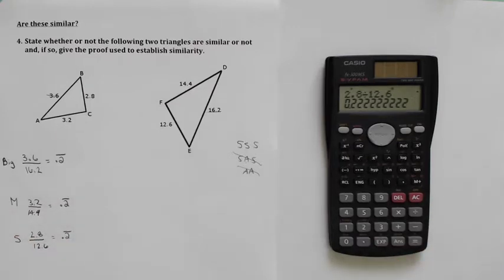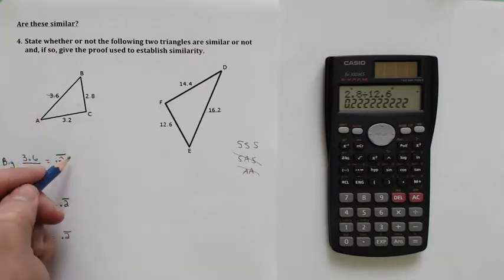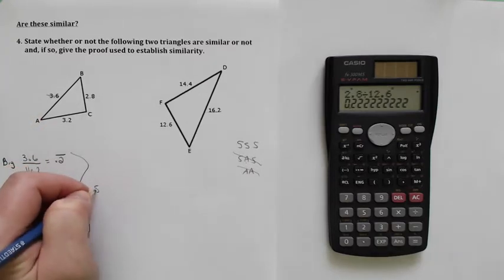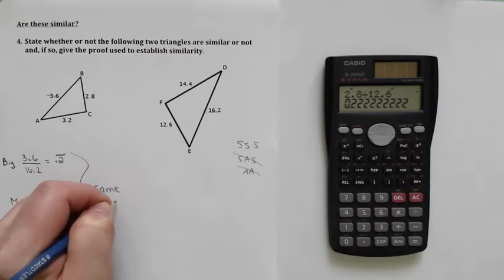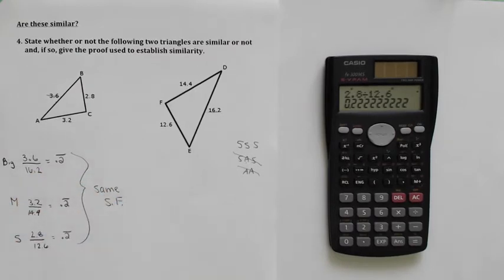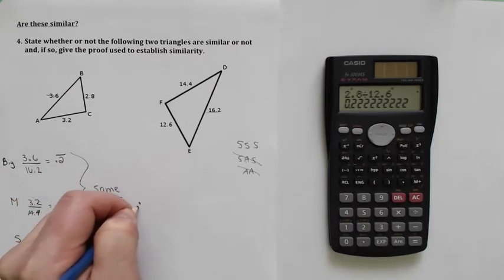So what that means is this one is scaled 0.2 times bigger than this one consistently for all three sides. All three sides have the same scale factor. Therefore, there's a little fancy symbol for therefore.